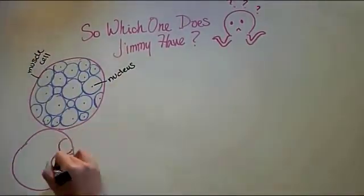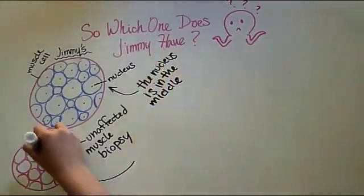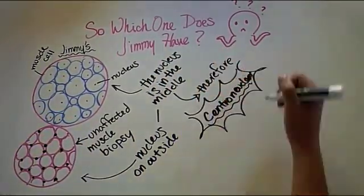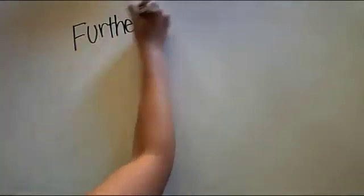Here's an example of centronuclear myopathy muscle biopsy. Notice how all the nuclei are in the center of the cells, and how the cells are different sizes. An unaffected muscle cell would have nuclei on the outside of the cells, and all of the cells would be the same size.